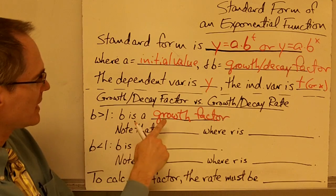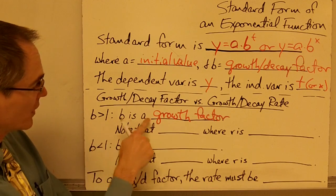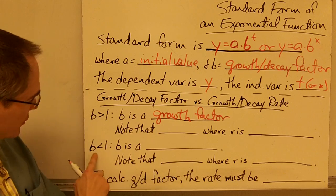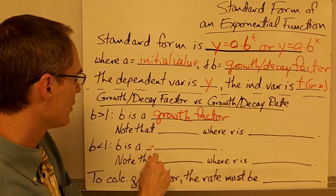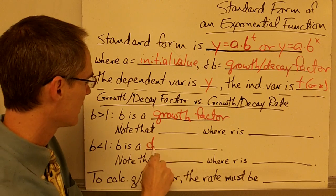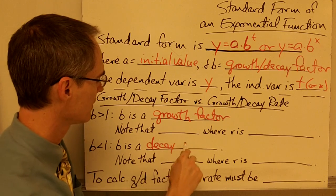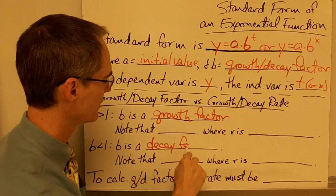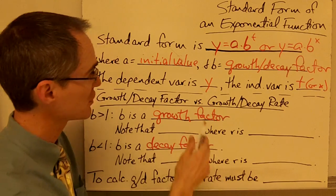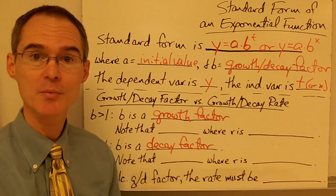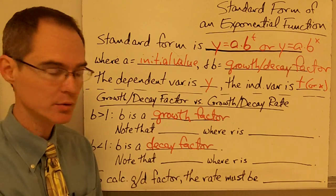If b is greater than 1, then b is a growth factor. If b is less than 1, then b is called a decay factor. That means that whatever your exponential function represents, your value is getting smaller.